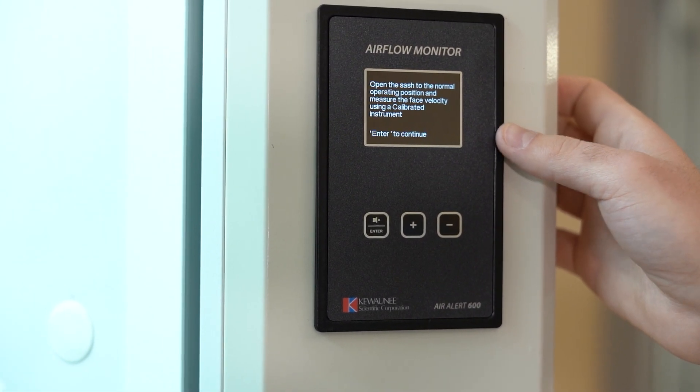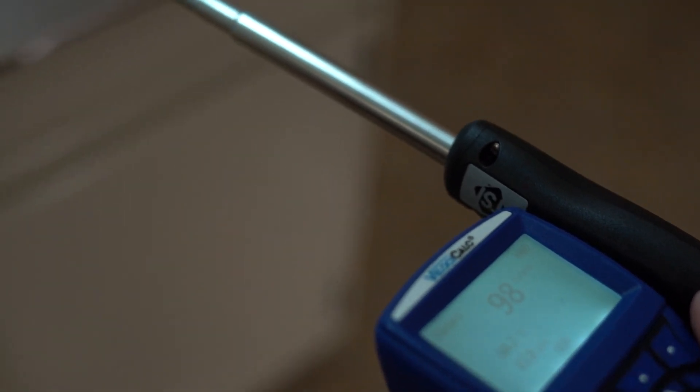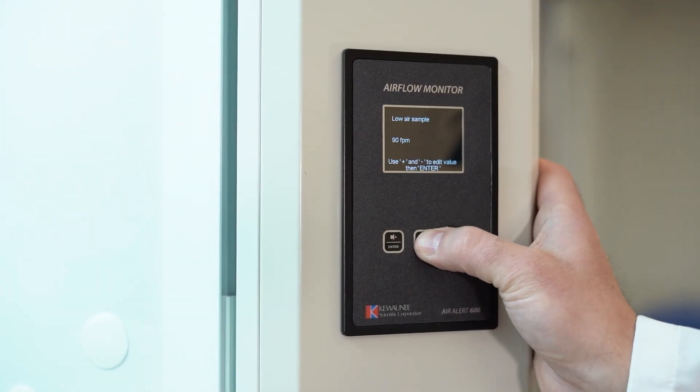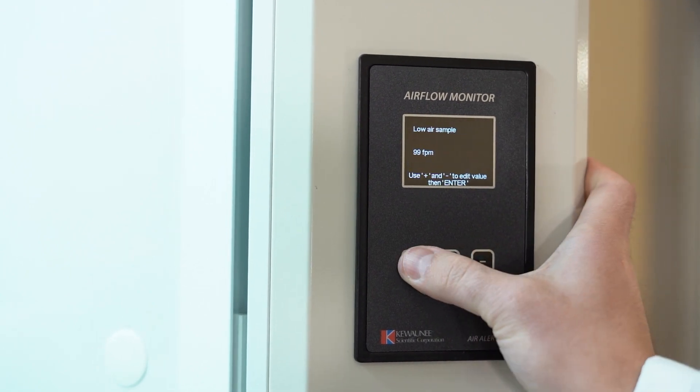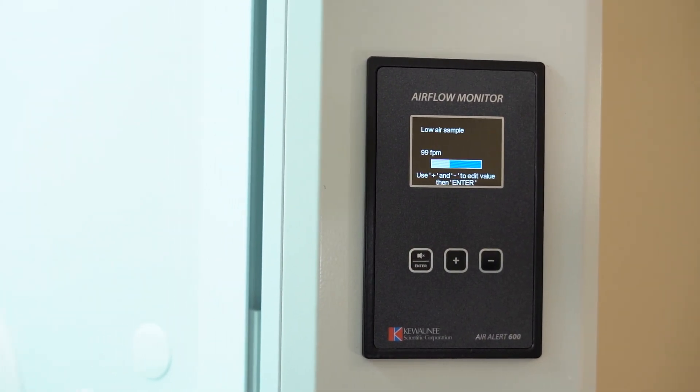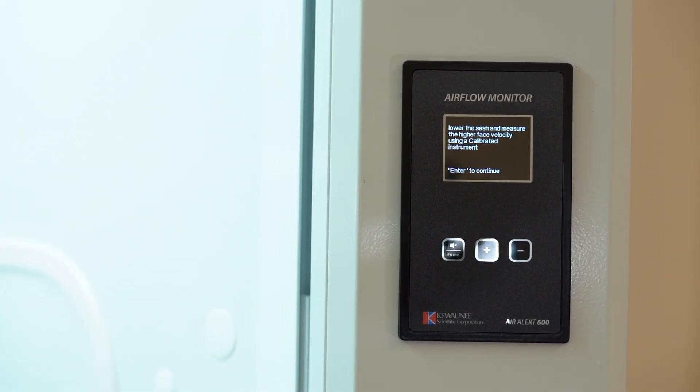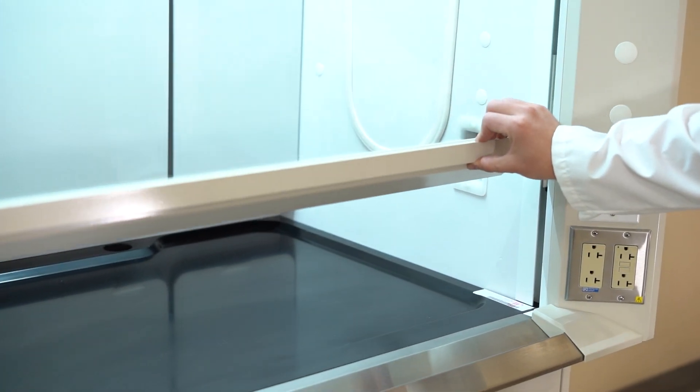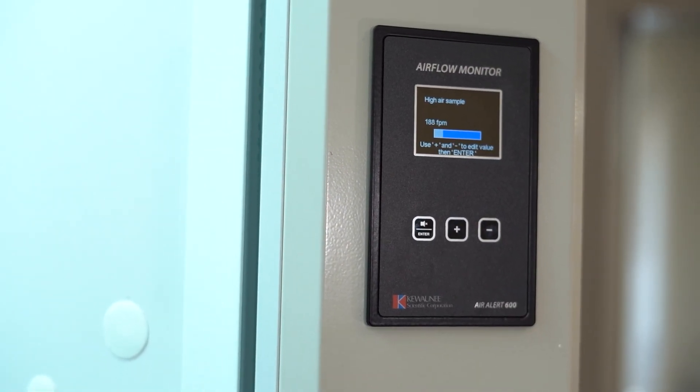You will measure the face velocity with the sash at normal operating position. The monitor will load that information, then ask you to measure the face velocity with the sash at a lower position. After entering that information, the calibration is complete.